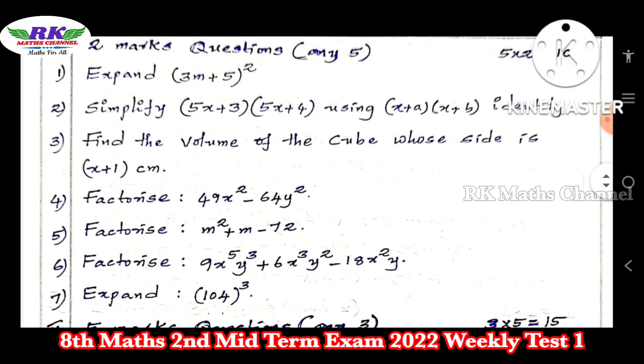Question number 5: Factorize m² + m - 72. So identity is used to do that. If you have another method, you can factorize.